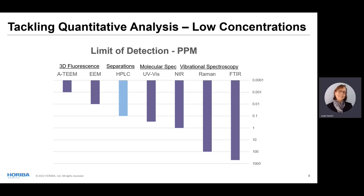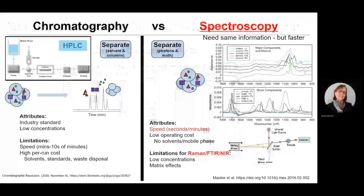This takes us to molecular spectroscopy. UV-Vis is better able to characterize sub-part-per-million concentrations, but it still doesn't approach the LODs provided by separations via HPLC. As getting away from slow separations-based analytics is what has us looking at alternatives in the first place, we need to keep looking. That brings us to multidimensional fluorescence approaches — A-TEAM and EAM, where EAM stands for Excitation Emission Matrix — which are able to achieve potentially part-per-billion or part-per-trillion LODs.